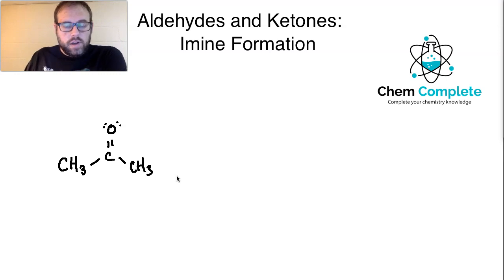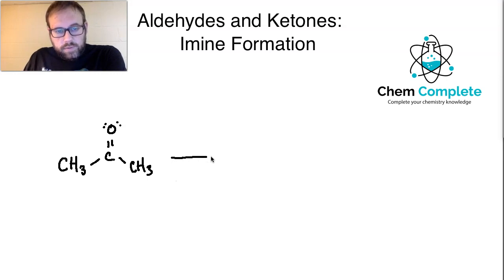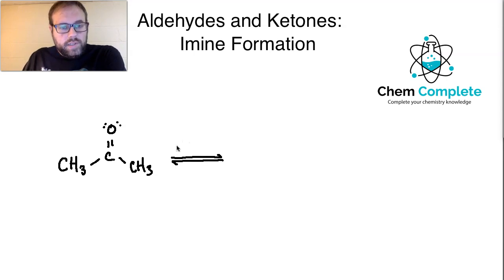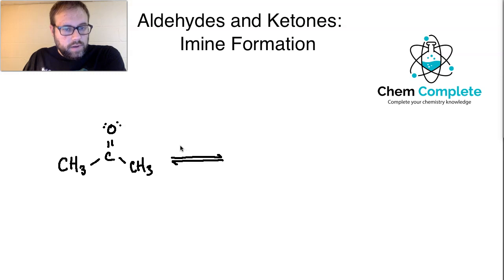Let's start with a ketone. These conditions are reversible, similar to the cyanohydrin addition. We're going to have some sort of a basic amine that is primary. For this particular example, I'm going to use CH3CH2NH2 — so ethylamine.